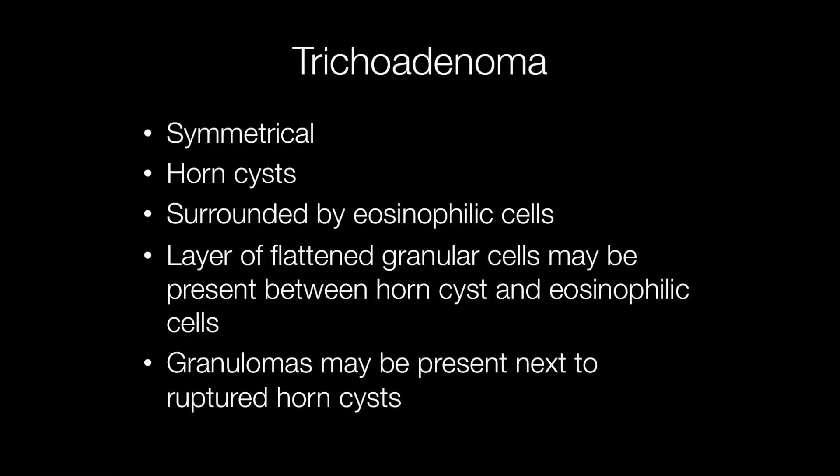Histologically they have quite a distinctive appearance. They are symmetrical, contain horn cysts, and the horn cysts are surrounded by eosinophilic cells. There is a layer of flattened granular cells that may be present between the horn cysts and the eosinophilic cells. As in trichoepitheliomas, granulomas and foreign body type giant cells may be present next to the contents of ruptured horn cysts.